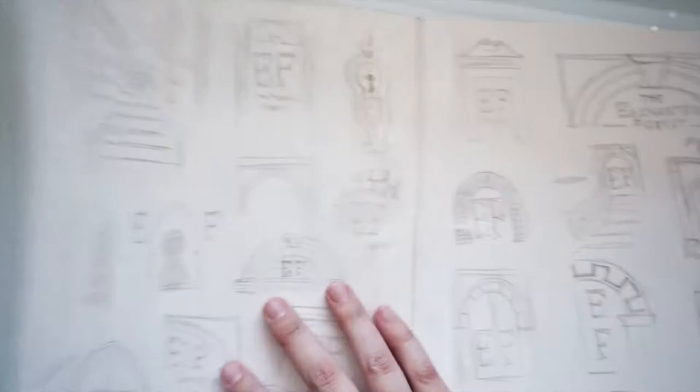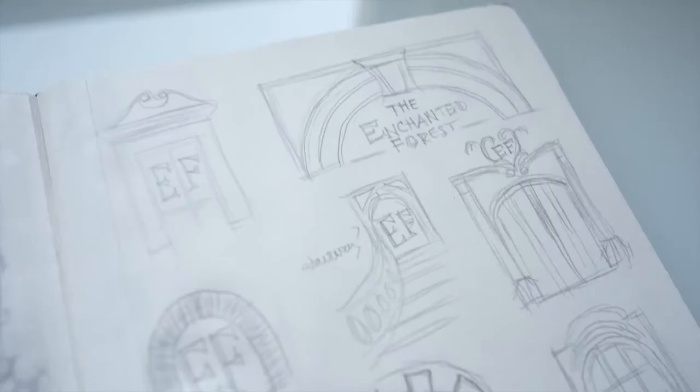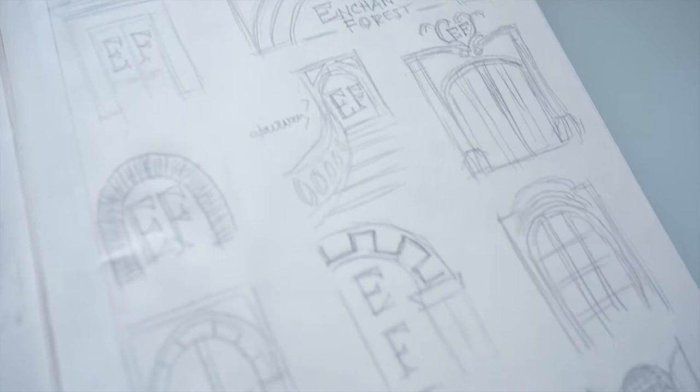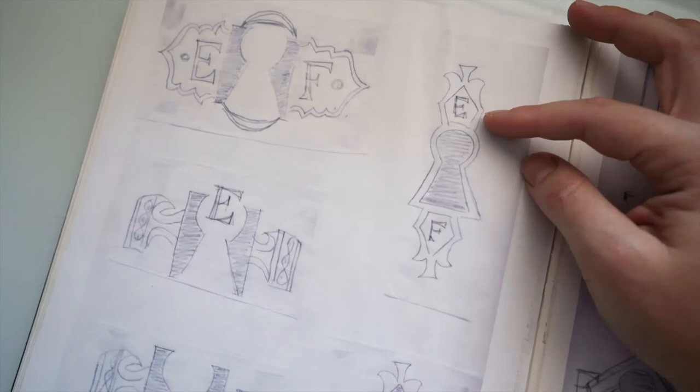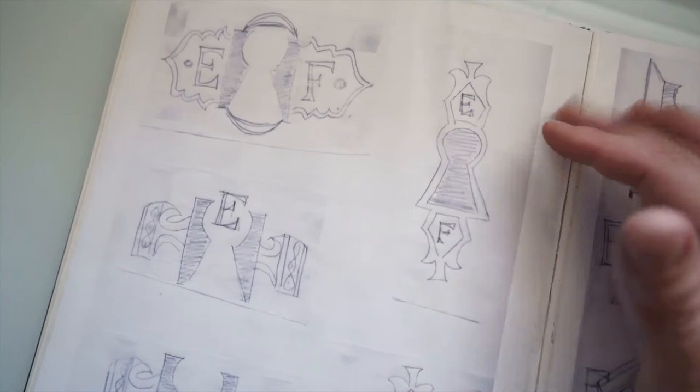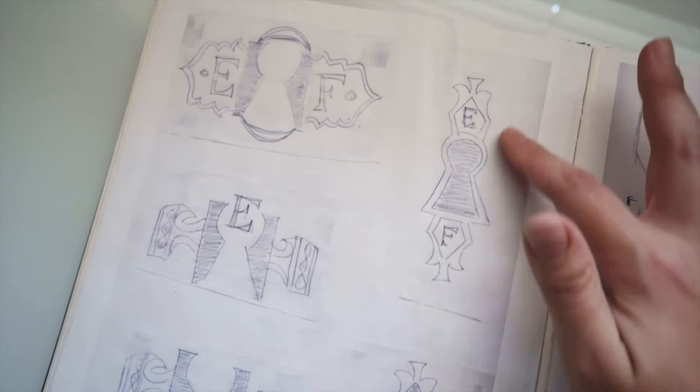More explorations. And more. We use a lot of tracing paper so that you could trace one idea, change something about it, trace it again, do another variation. It's a way to help you create more versions without redrawing the same logo over and over again. So a little tip when you are sketching out logo concepts.